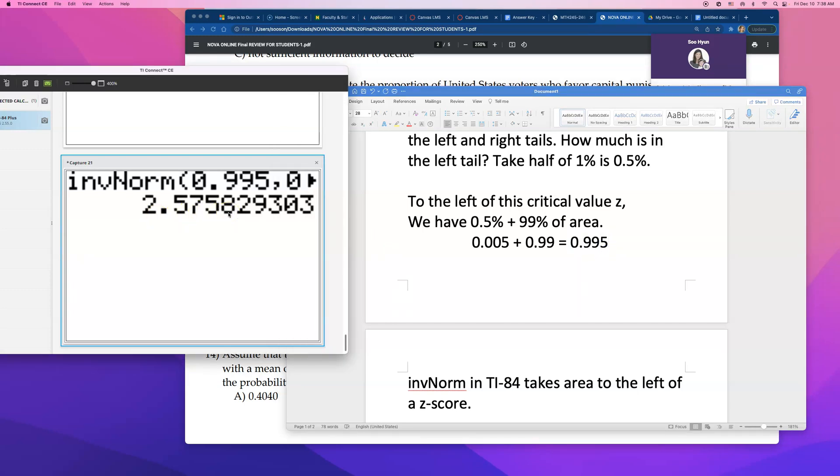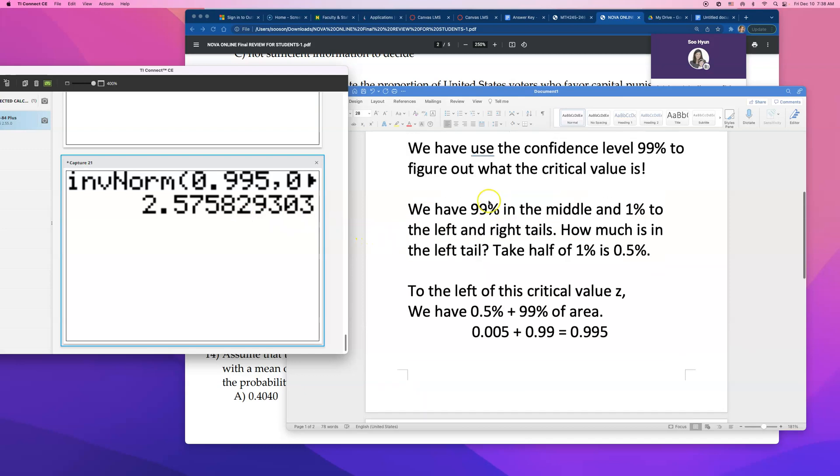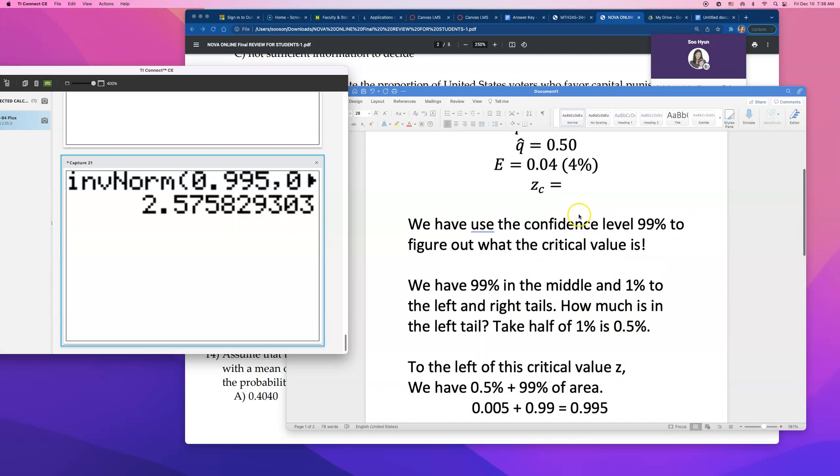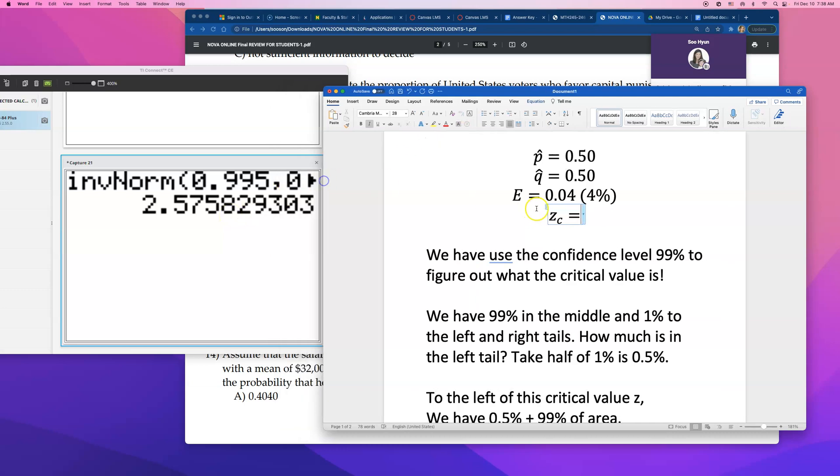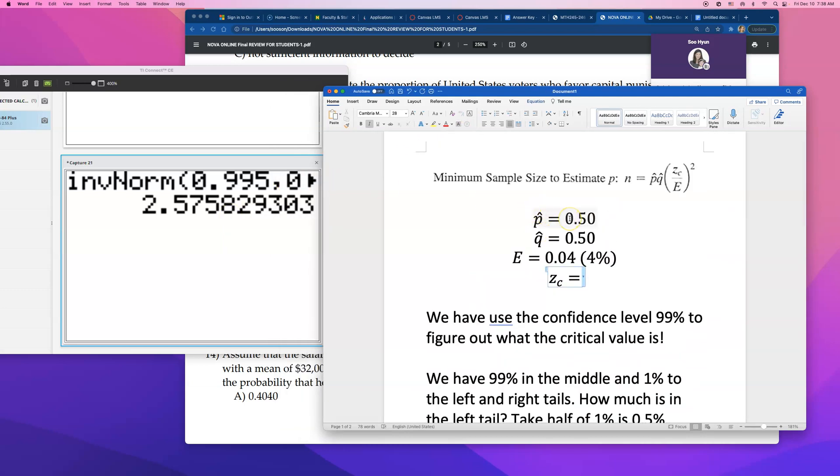Remember, the critical value that has this much area to the left is 2.5758. Also, for two-sided or two-tailed tests, for confidence interval, it can be negative 2.5758, because it's in between that negative value and the positive value, but for the sample size problem, you can just write that positive number down, 2.5758.